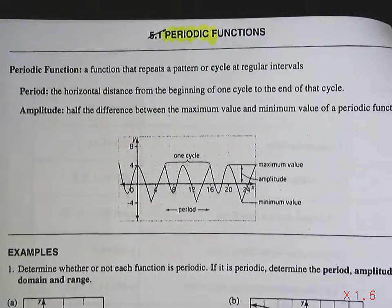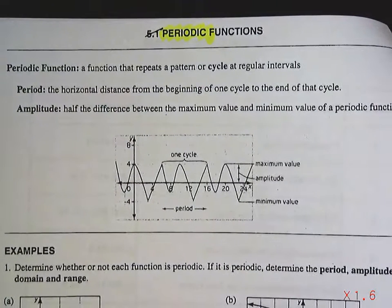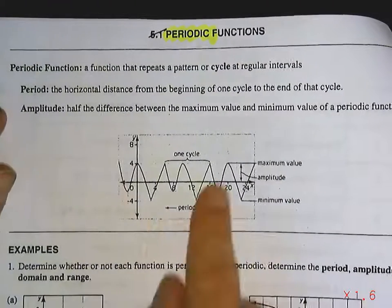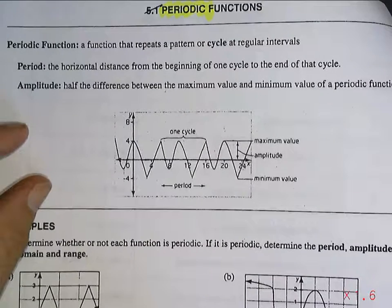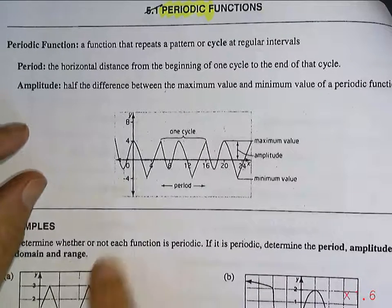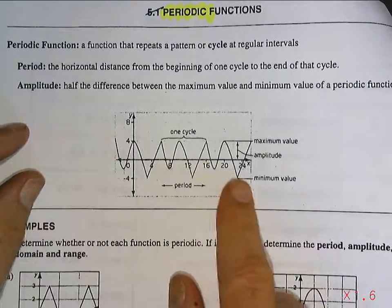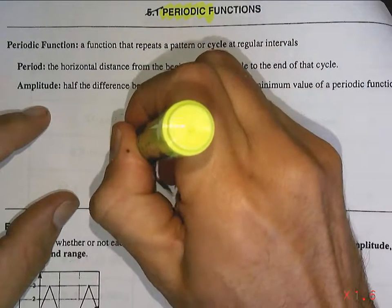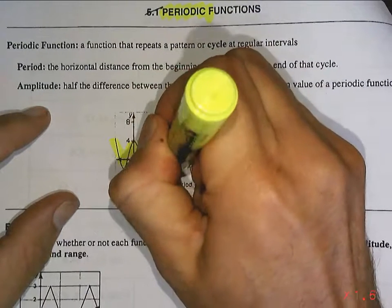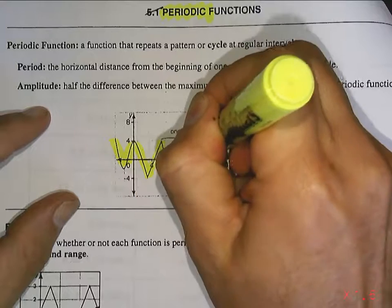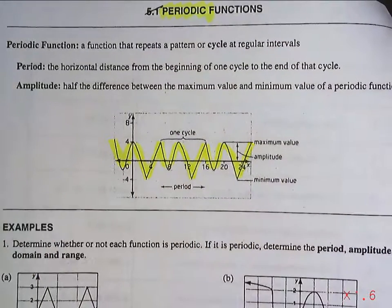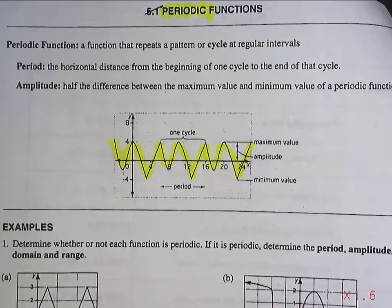Amplitude, by definition, is half the distance between the maximum and the minimum value. So here's a diagram. This is a periodic function. It repeats itself over and over and over again. And you'll see that we would expect this to keep going and going and going.